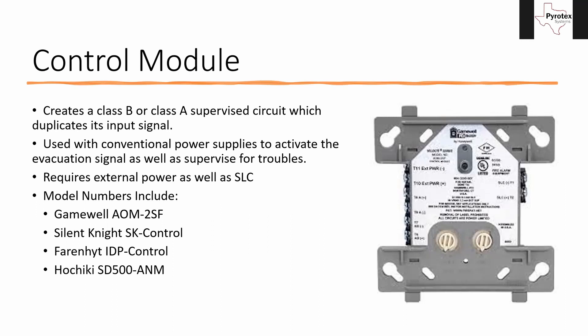We use these to trigger our conventional power supplies. We take auxiliary power off the power supply itself, run it into where it's labeled external power negative and external power positive. Then we come out of the Class B terminals at the bottom left-hand corner and go into the input trigger of the power supply. There's a spot to daisy chain the next signal or land your end-of-line resistor. This not only controls the power supply — we can program over the SLC to tell it when to turn on and off in a more intelligent fashion.